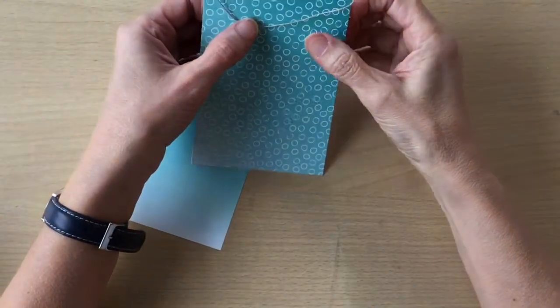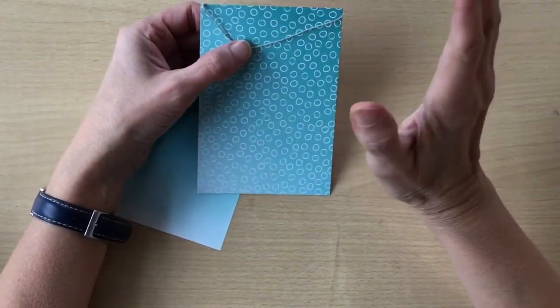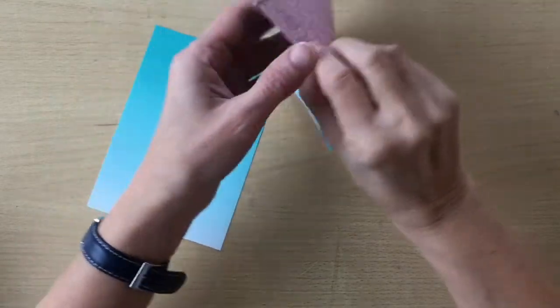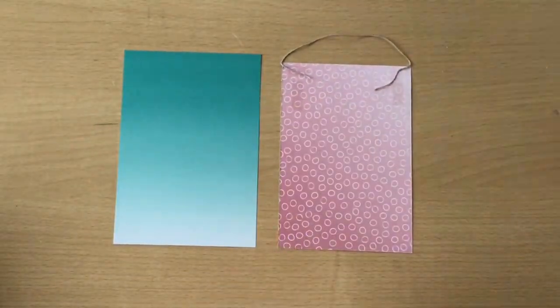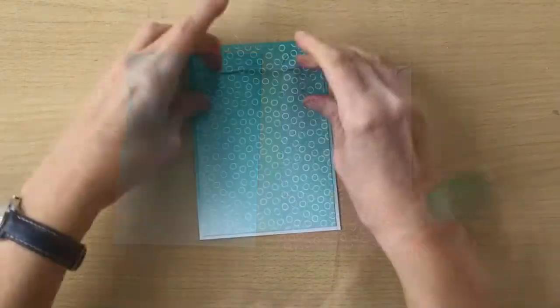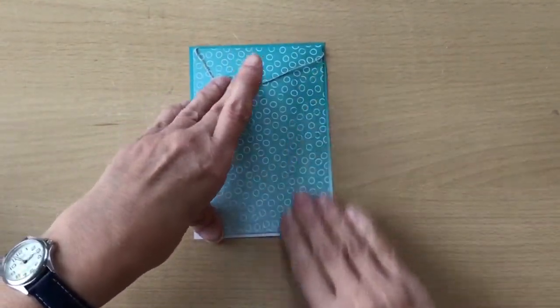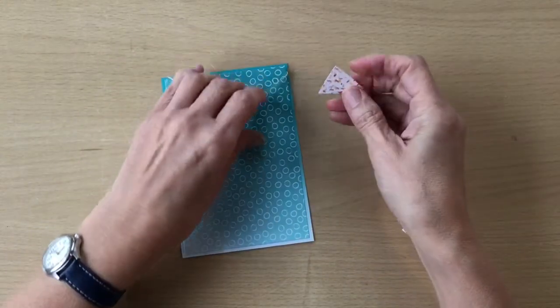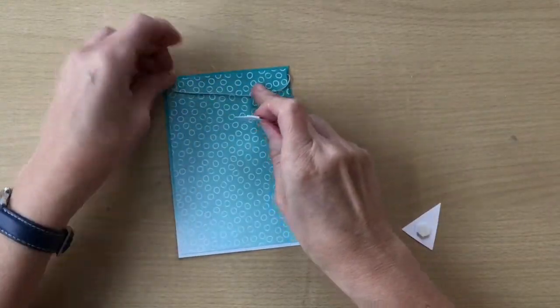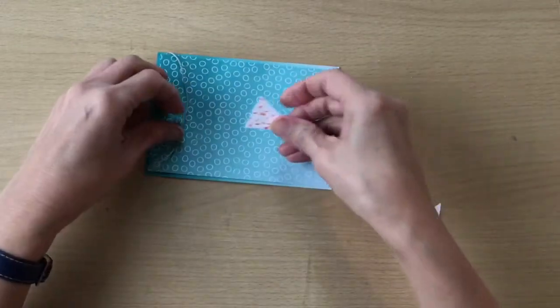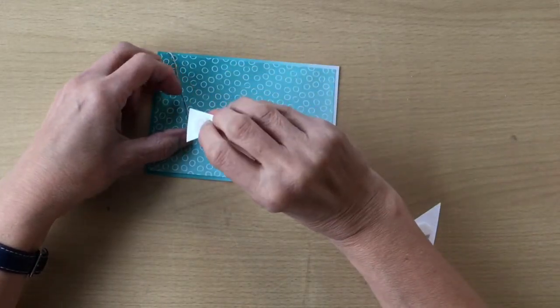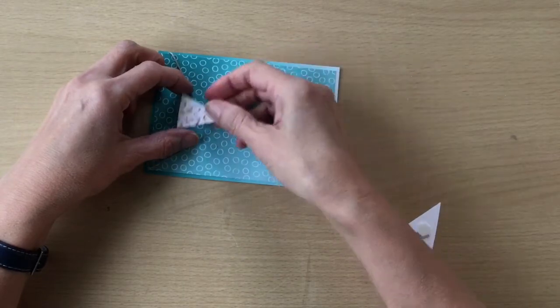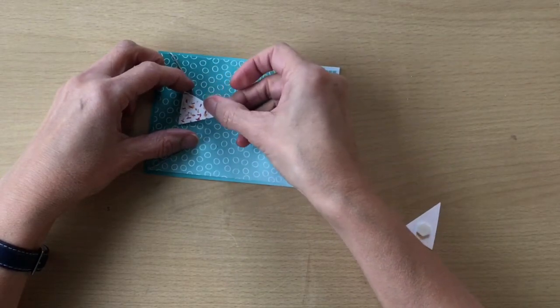So I've put my linen thread at the top there. My battery just ran out on my camera, I hope I haven't missed a huge chunk. I'm just going to stick this to the other Designer Series Paper. I've put dimensionals on the back of my bunting and I'm going to pull my bunting down to where I want it to be and then stick my bunting onto my linen thread.